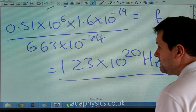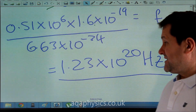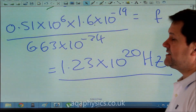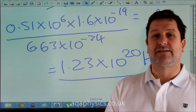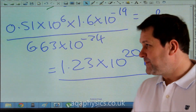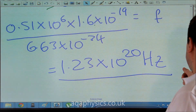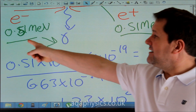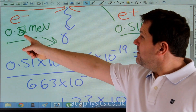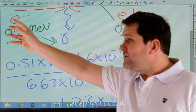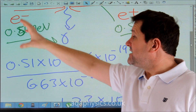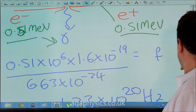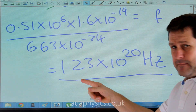That equals 1.23 times 10 to the 20 hertz. That's exactly what I would expect because it's half of the answer from before. That is the rest energy of this electron, and when it ceases to exist and produces this gamma ray, that would be the frequency of that gamma ray.